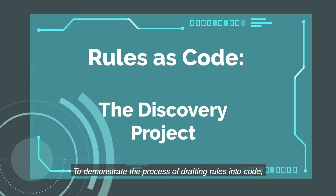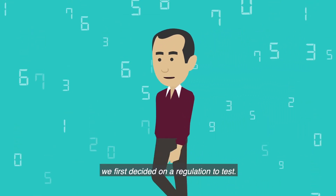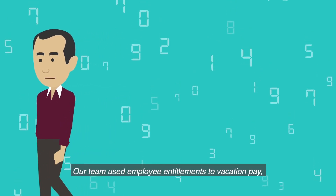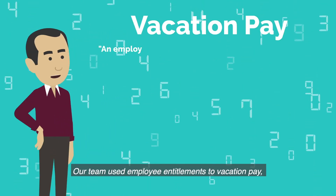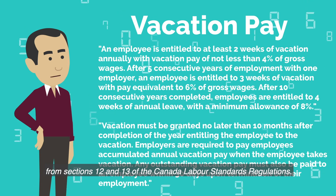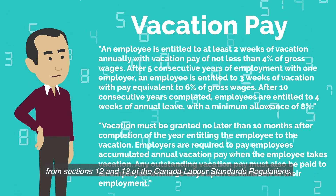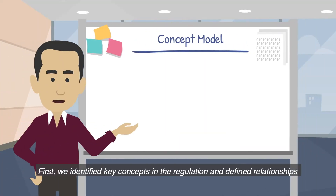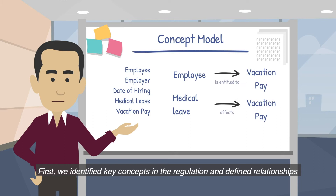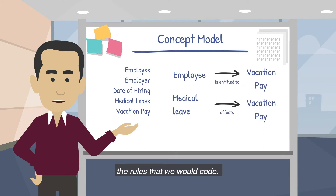To demonstrate the process of drafting rules into code, we first decided on a regulation to test. Our team used employee entitlements to vacation pay from Sections 12 and 13 of the Canada Labour Standards Regulations. First, we identified key concepts in the regulation and defined relationships between them, creating a concept model that helped us better understand the rules that we would code.